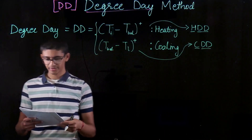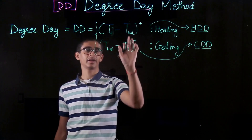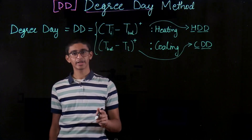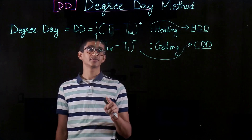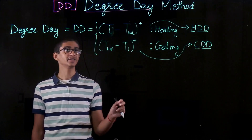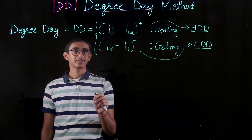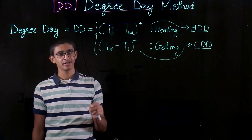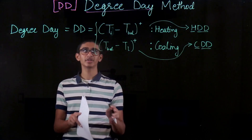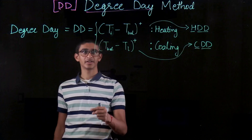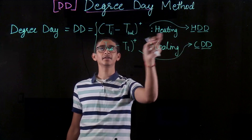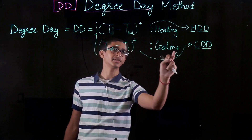T_balance is an outside temperature — not an indoor temperature. It is the outside temperature at which the building does not require heating or cooling. That means the outside temperature is such that the heat gain in the building exactly equals the heat loss from the building, so there is no requirement for heating or cooling. If indoor temperature is greater than T_balance, I need heating; if T_balance is greater than indoor temperature, I need cooling.